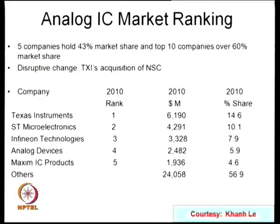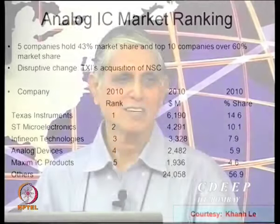Maxim does very niche business. The other 102 companies make 24 billion dollars — 56 percent of the market. The top 5 together hold 43 percent, and if you take the top 10, they hold about 60 percent. There are 107 companies total working on analog. The two segments in analog are application-specific and general purpose — like op-amps which are general purpose.